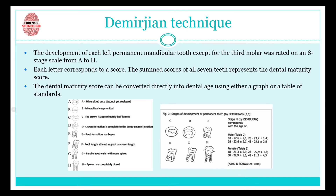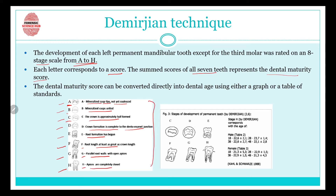The third method is the Demirjian emergence technique. The development of each permanent mandibular tooth, except for the third molar, was rated on eight stages from A to H. Each letter corresponds to a score. The sum score of all seven teeth represents the dental maturity score. Each stage means something different: A means mineralized cusp tips not yet coalesced; B means mineralized cusps united; C means crown approximately half formed; D means crown formation complete to the dentino-enamel junction; E means root formation has begun; F means root length at least as great as crown length; G means parallel root walls with open apices; H means apices completely closed.